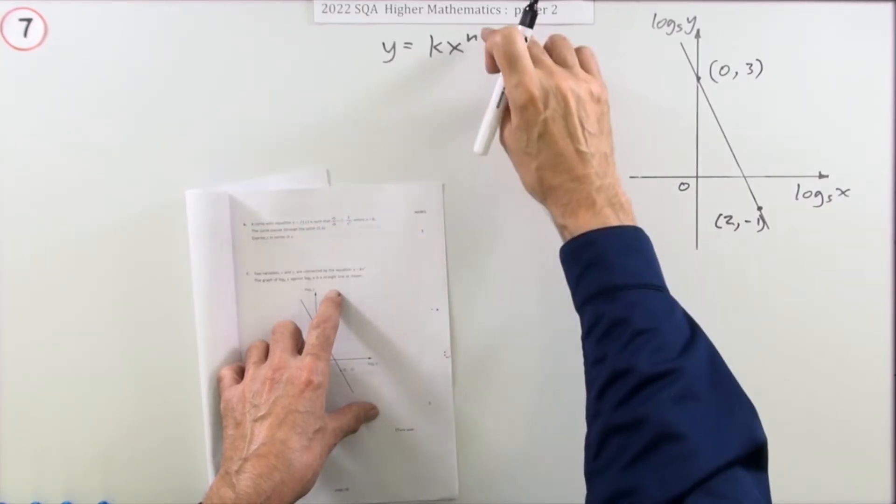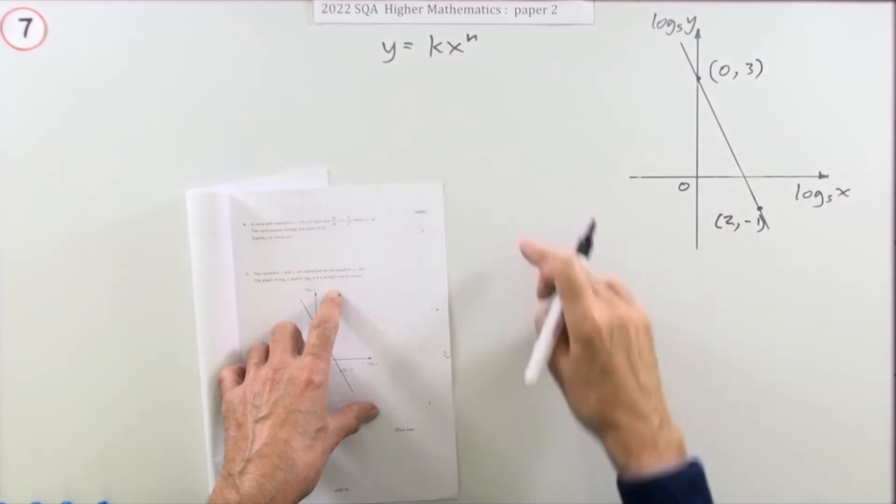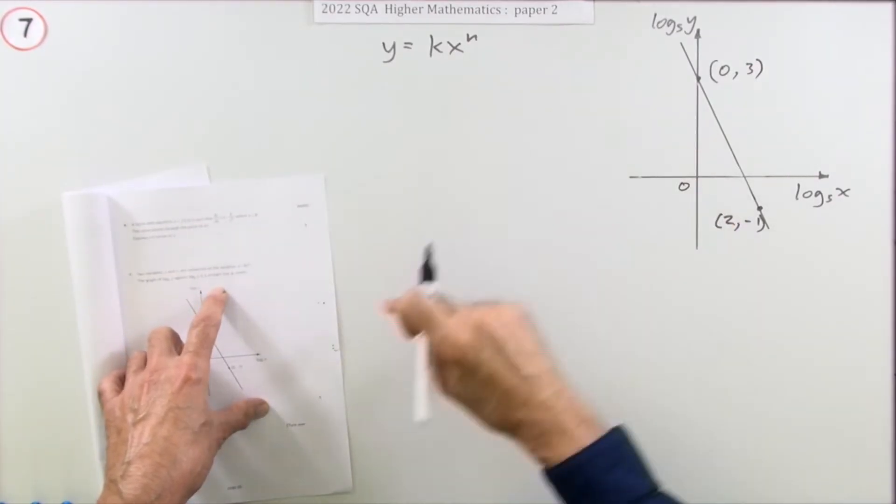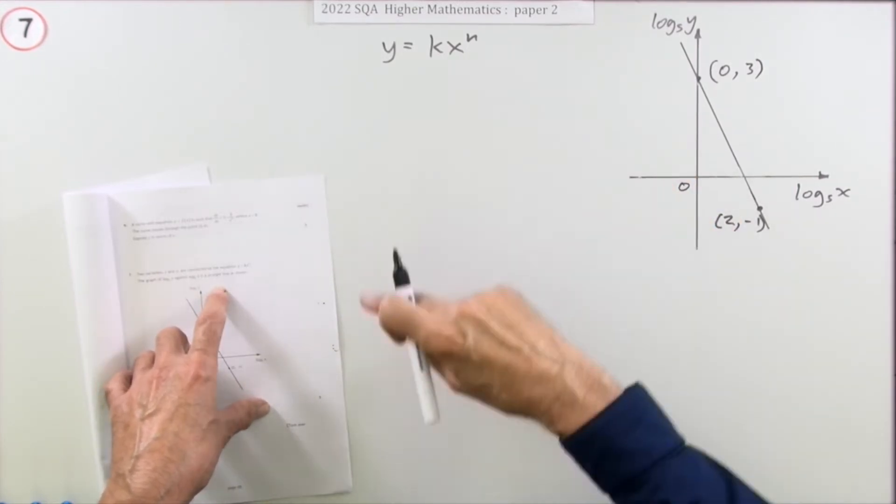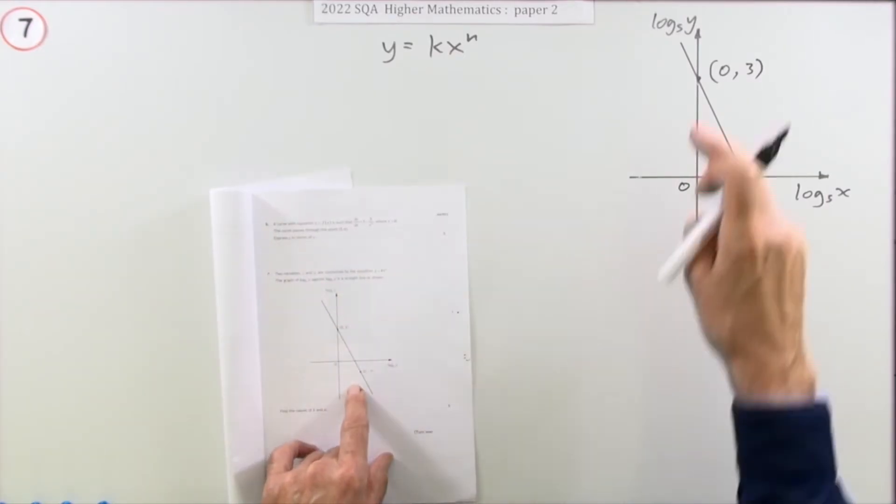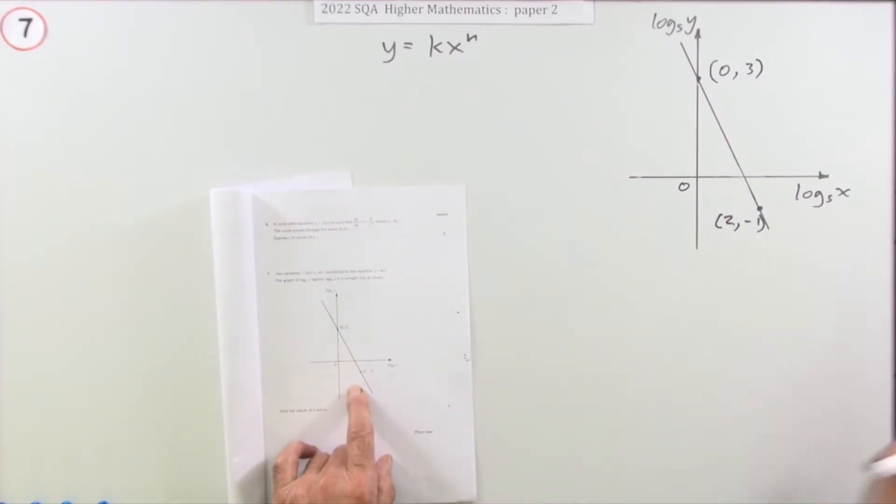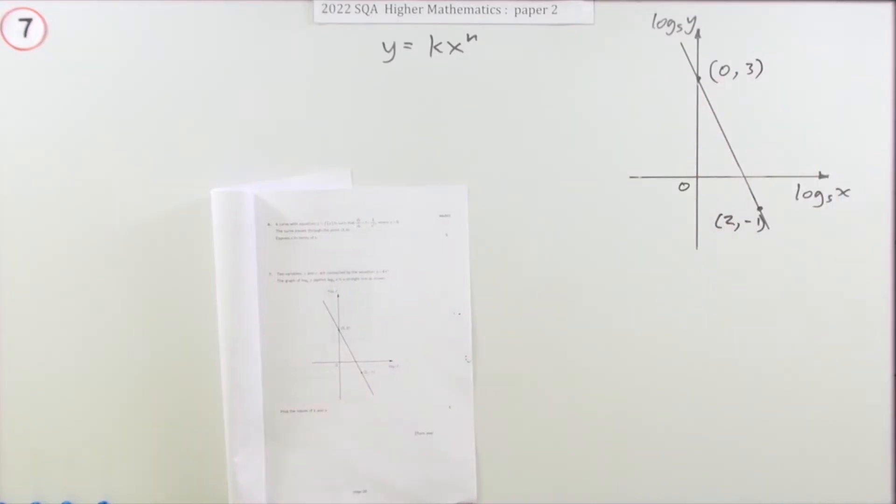you've got a connection between the variables that involves a power of a variable. Now if you were just to plot the raw data, then you would get some sort of curve, but that curve would look the same if it was squared, or cubed, or power 4, or even some fractional power. So what you do instead is you plot the logarithms of the value, because in plotting the logarithms, if that ends up as a straight line, that straight line will give you the values you need.